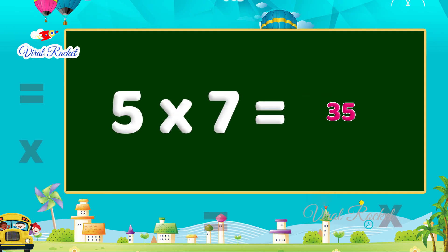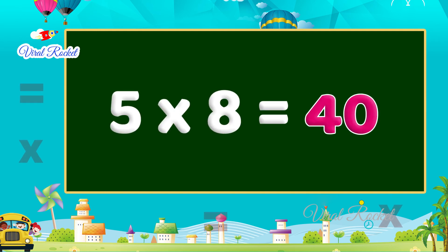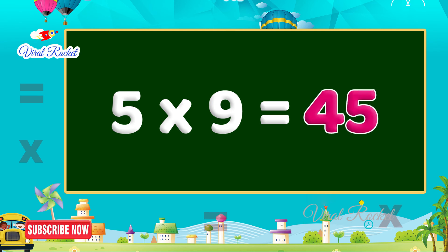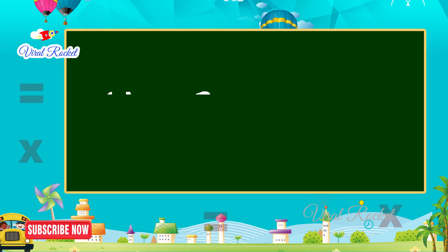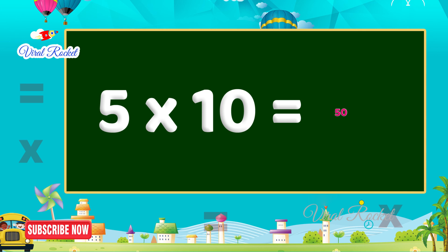Five sevens are thirty-five, five eights are forty, five nines are forty-five, five tens are fifty.